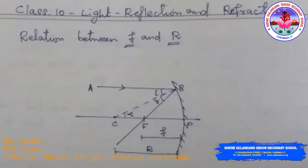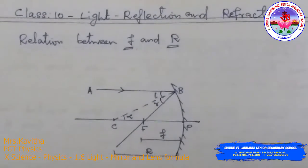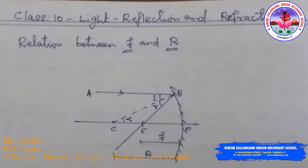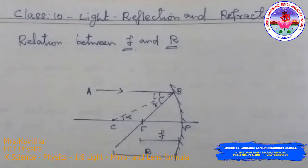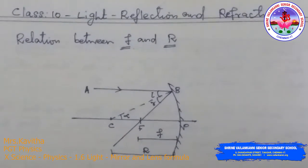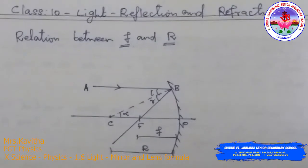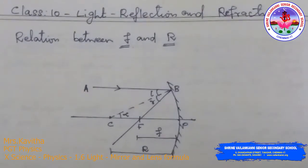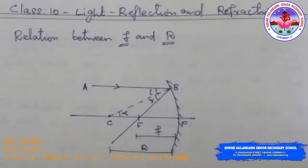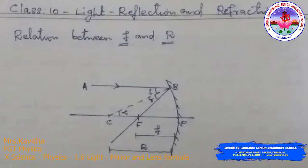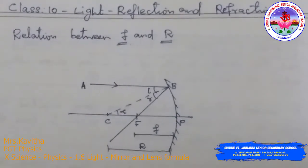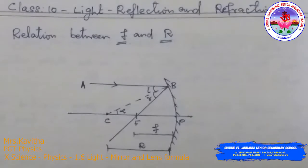Some of the children asked me the relation between F and R proof, the mirror formula, the lens formula proof they asked. Now we can see the proof — how we are going to show that R is equal to 2F, or F is equal to R by 2, how it came through the relation between F and R.